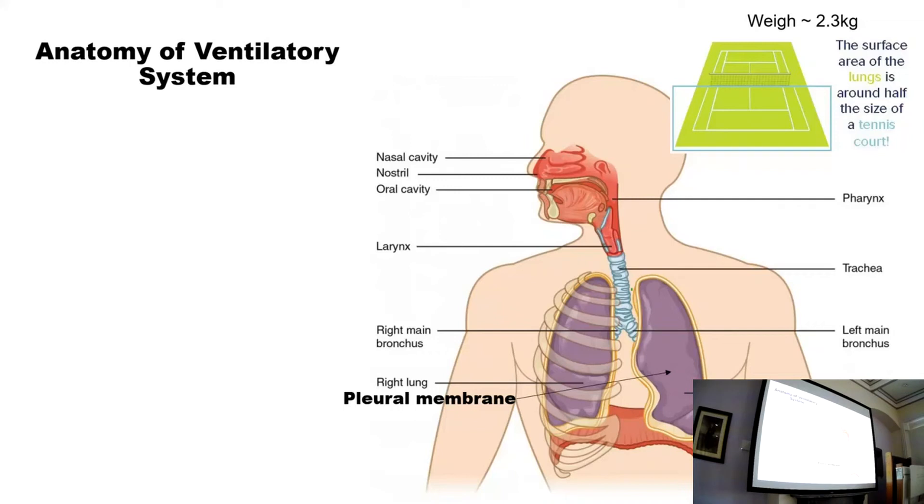And it's those alveoli - if we were to put them end to end, they would cover half of the tennis court. We need to have a large surface area tightly packed together to allow gaseous exchange to happen quite rapidly, because we know that without oxygen for even a short amount of time, we would be likely to die. So these lungs are specifically adapted to have a very large surface area.